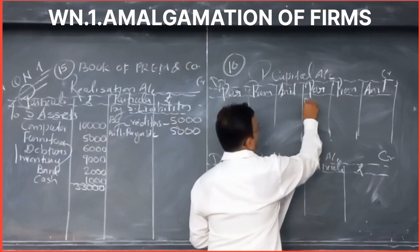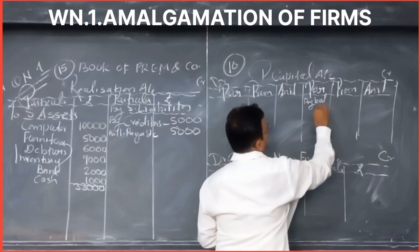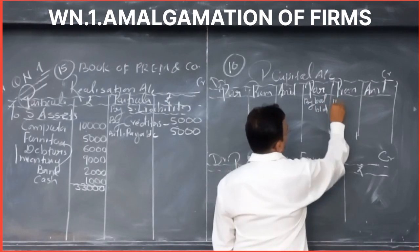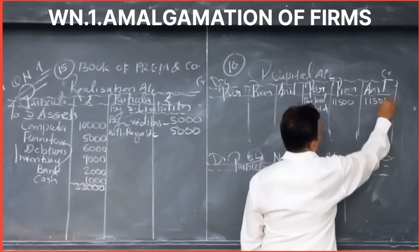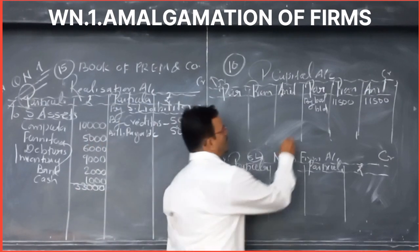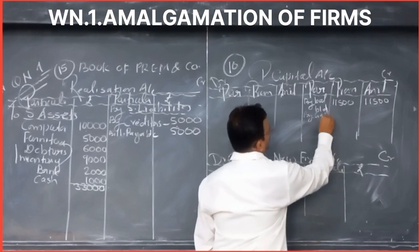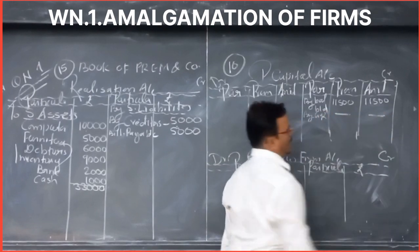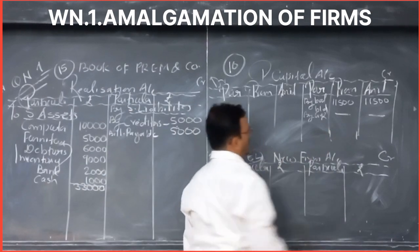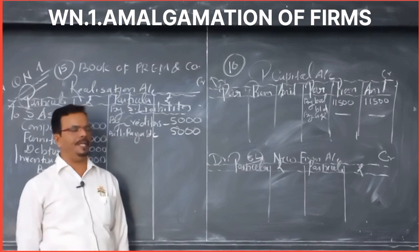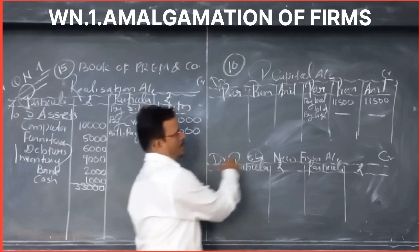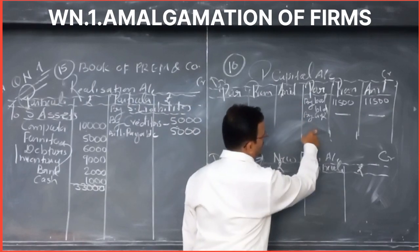Second is liability transfer. Third, we transfer capital — balance brought down. Capital given: Prem 11,500, Anil 11,500, as given in the balance sheet. General reserve is not given, shown as dash. If general reserve had been given, we would write it here and distribute it between Prem and Anil in their profit sharing ratio. So: asset transfer, liability transfer, capital transfer, general reserve transfer.